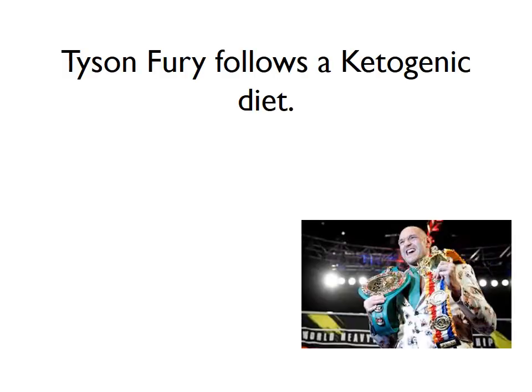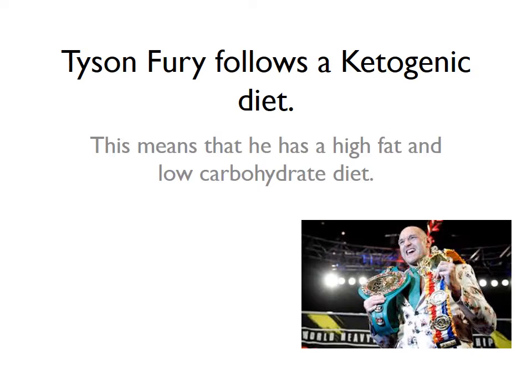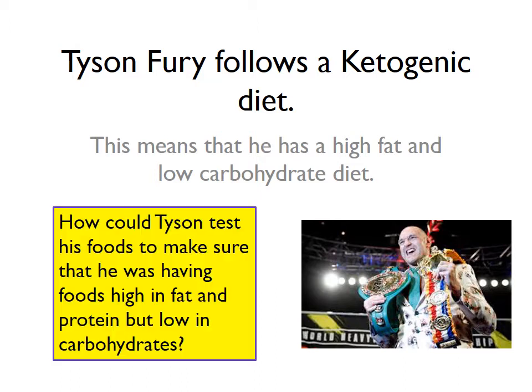Tyson Fury follows a ketogenic diet, which means he has a high fat and low carbohydrate diet. Remember, carbohydrates include both starch and sugars. Have a think about how Tyson could test his foods to make sure that he was having foods that were high in fat and protein but low in carbohydrates like starches and sugars.